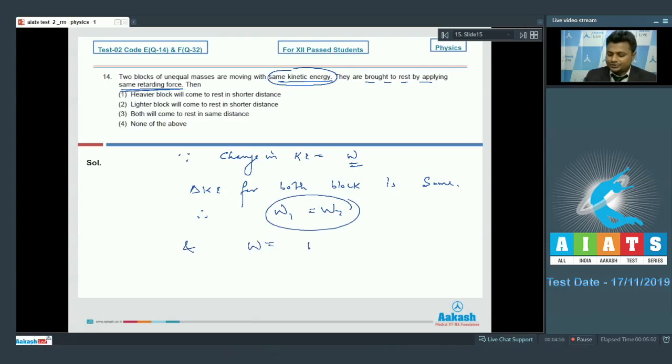You know very well W is equal to f dot s. Retarding force is also given same, so displacement s1 and s2 will also be same. So both will come to rest at the same distance.